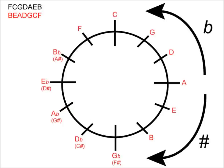One final example — A flat minor. It's a flat, so we count on the flat side of the circle: D is one notch, G is two, C is three, F is four, B flat is five, E flat is six, A flat is seven. So A flat minor has seven flats in its key signature.